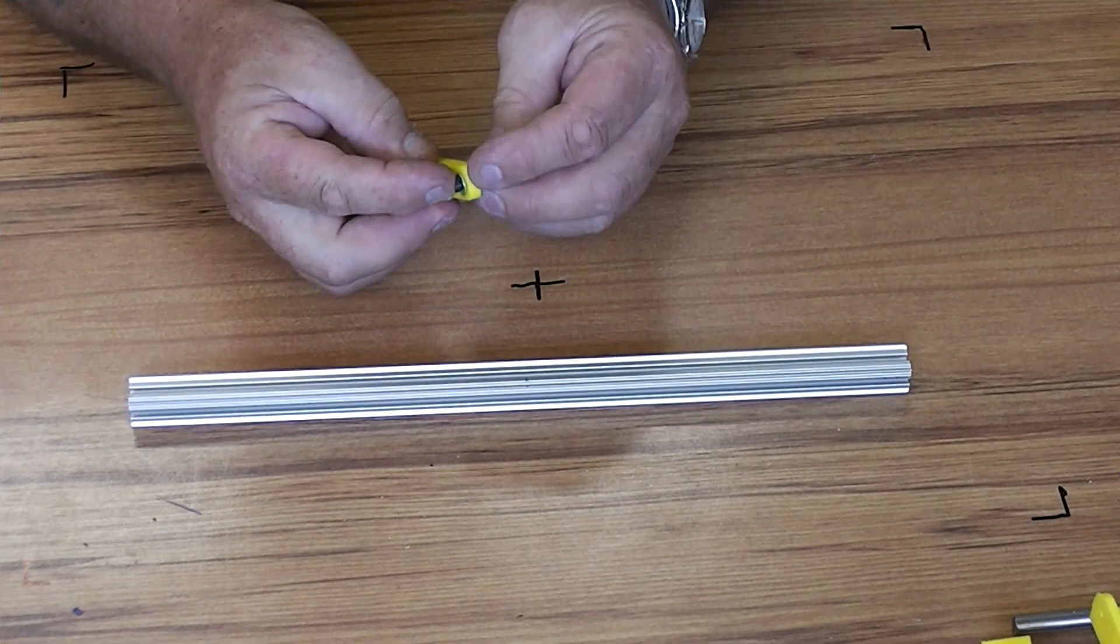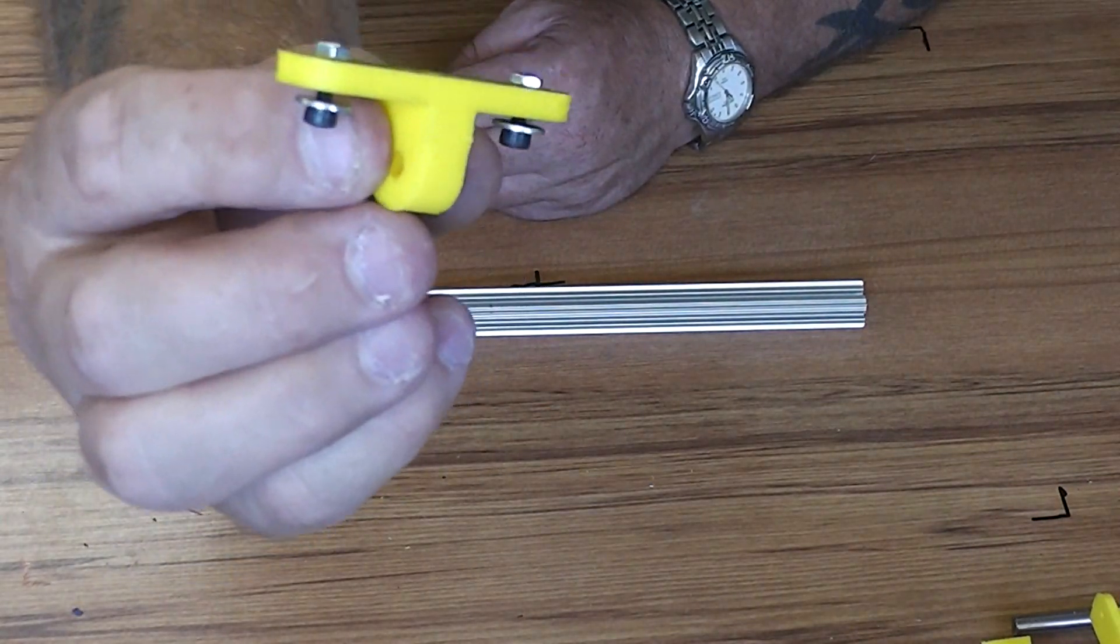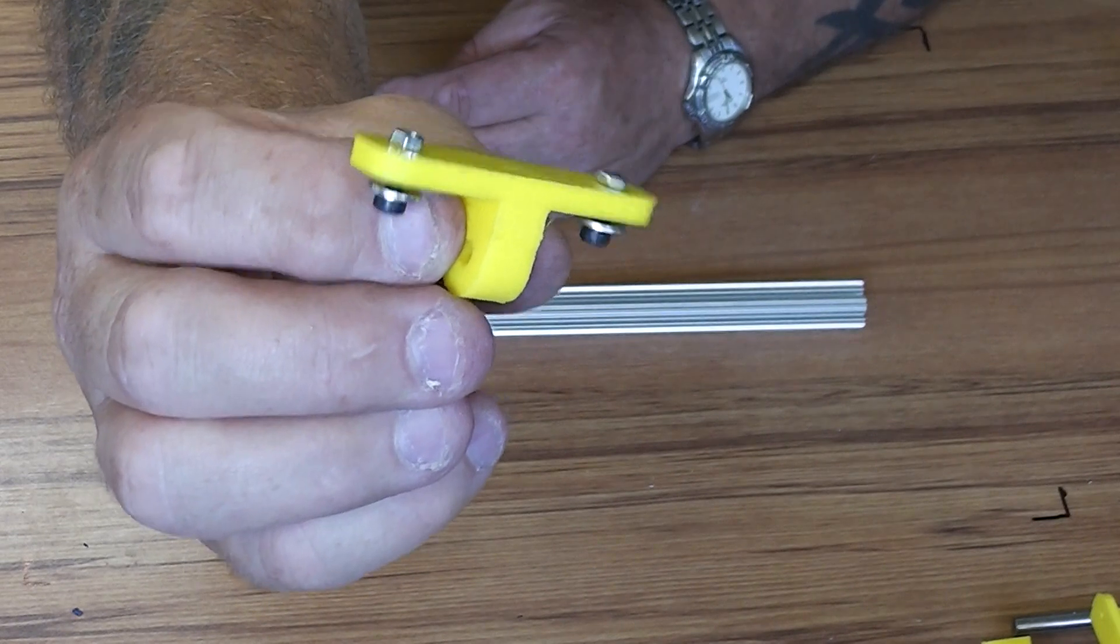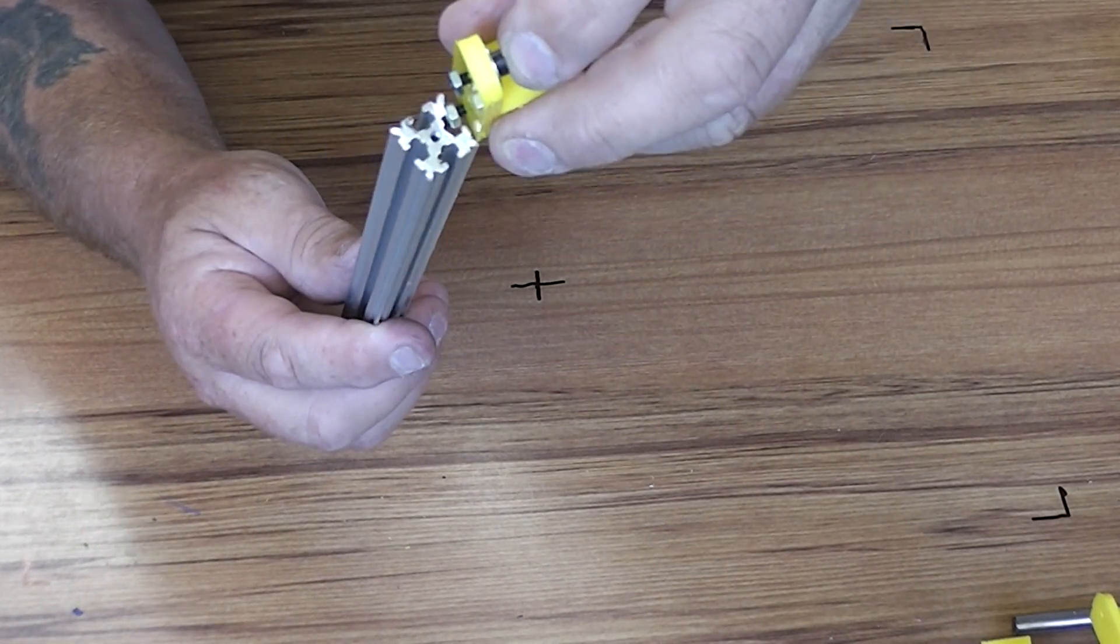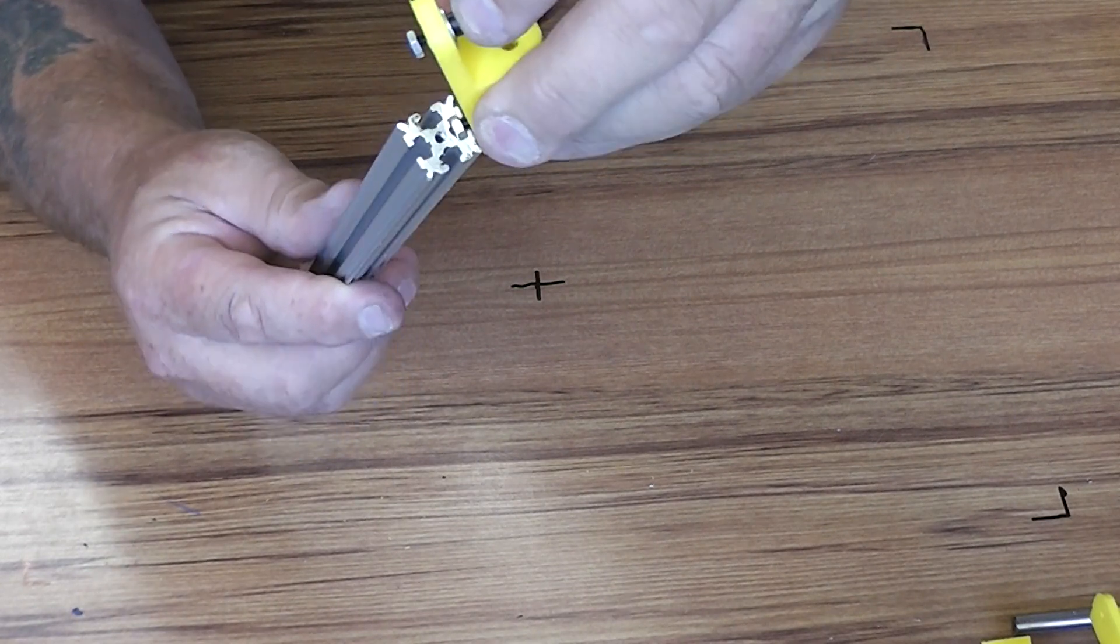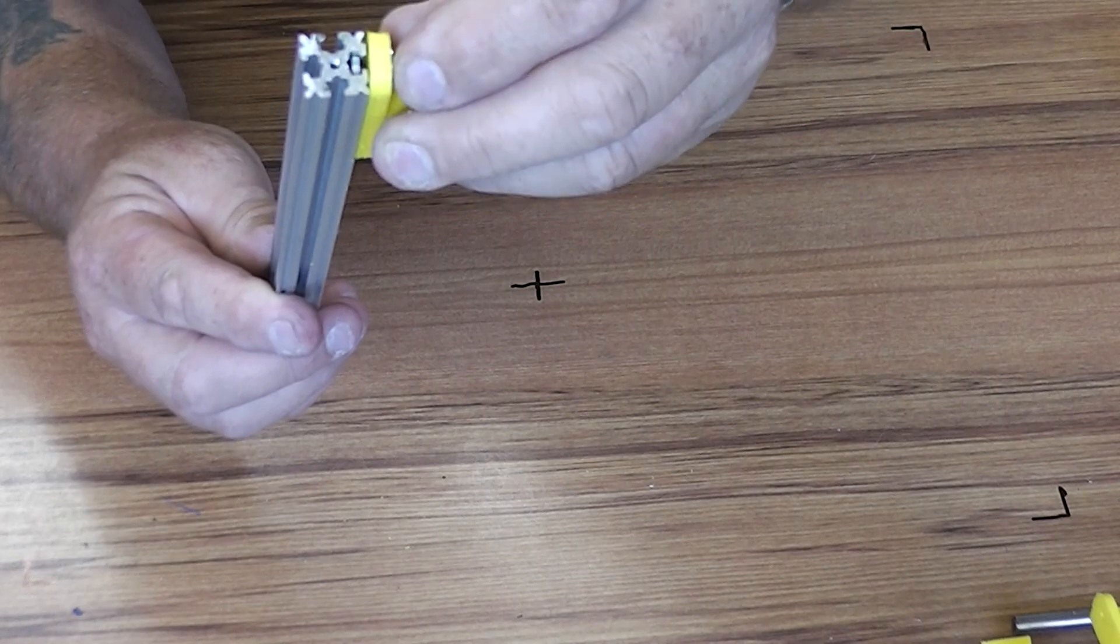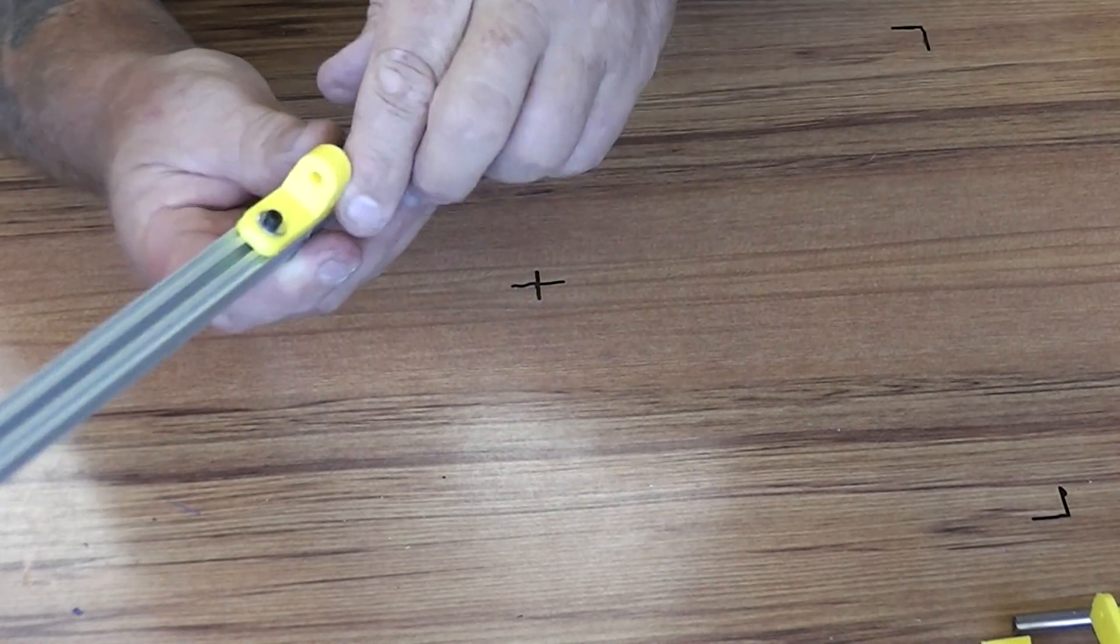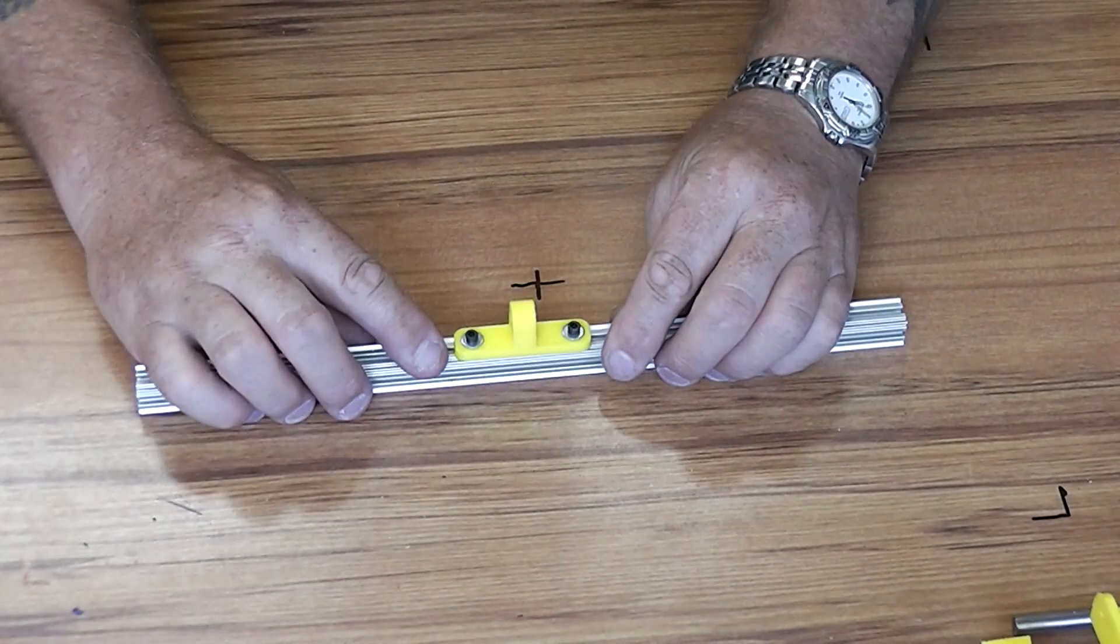So this is pre-assembled on it with the screws. You see that? And then I'm going to slide that onto the end of the extrusion. So carefully aligning the nuts, give them a wiggle and they'll slip in. Like that. And then slide it along to the mark you've already made and tighten them up.